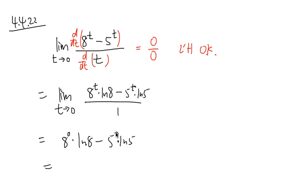8 to the 0 is 1, and 5 to the 0 is also 1. So here we have ln 8 minus ln 5, and this is the difference of 2 ln. We can combine them together into 1 ln, and that will be ln of the quotient, 8 over 5. And that will be the limit for the original.